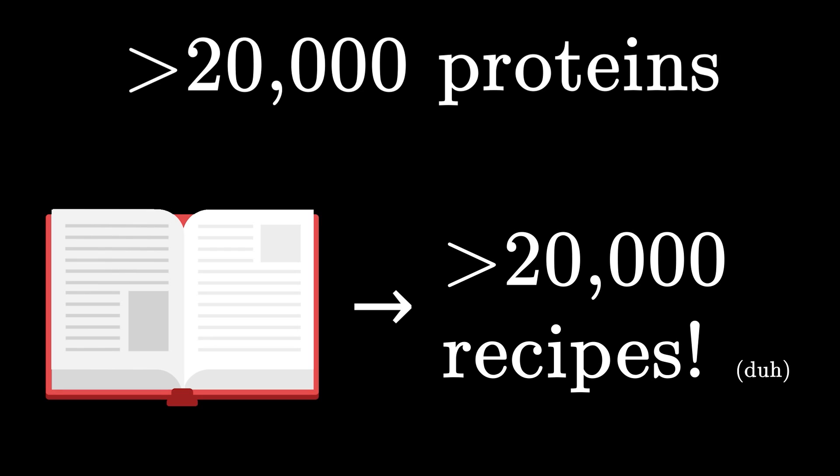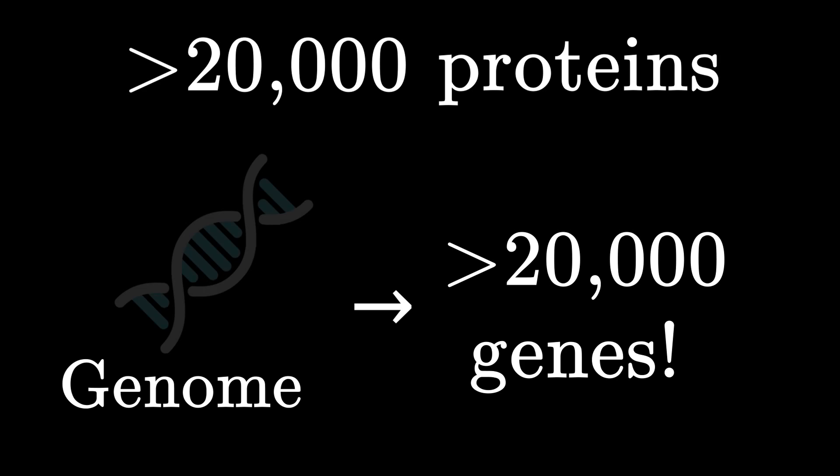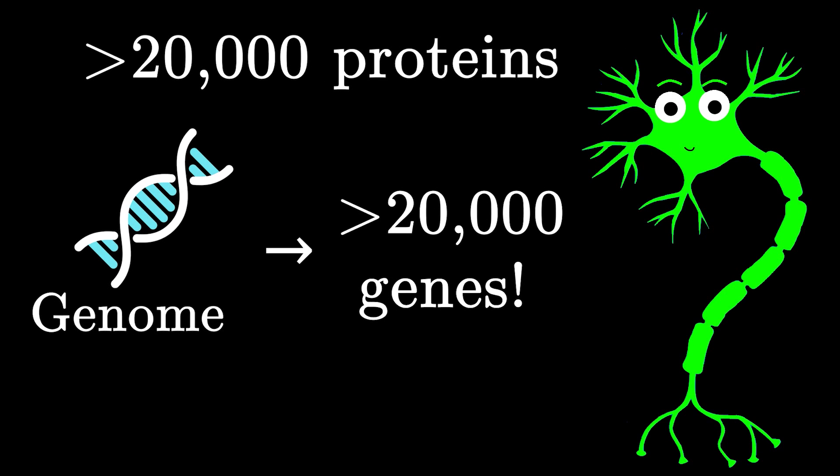With regards to terminology, scientists call each protein recipe a gene, and they appropriately refer to the entire recipe book as the genome. Take a moment and really make sure that you've understood what you just heard. Because the idea of genes being segments of DNA that hold the instructions to make proteins is the most important concept in all of modern biology. No exaggeration.